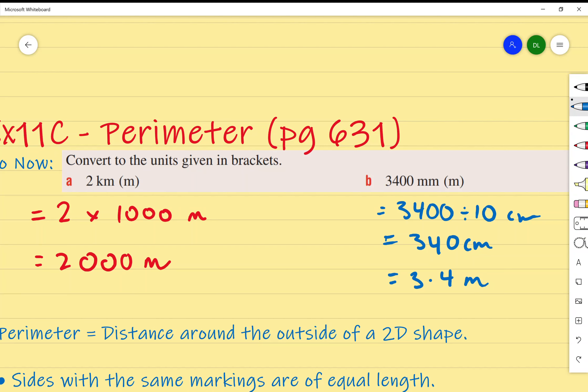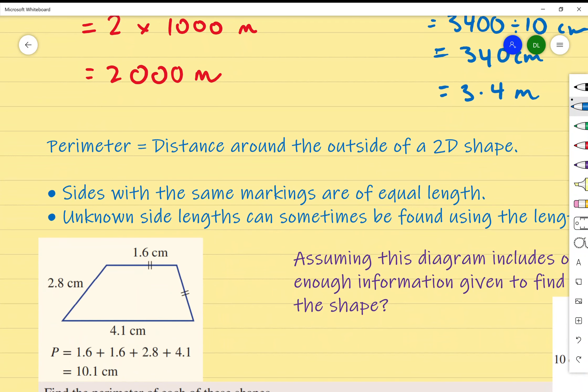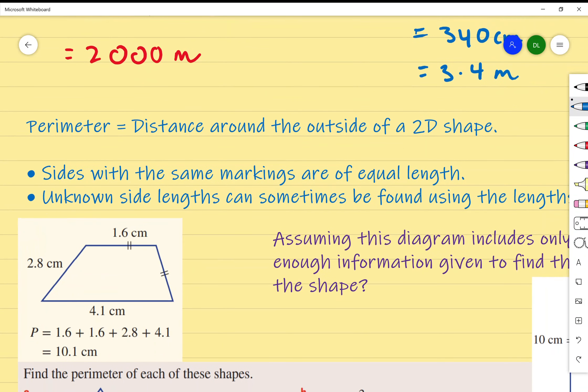These are the notes for today's exercise 11C. Write down the first sentence: Perimeter equals distance around the outside of a 2D shape. Some of you already did this in primary school, but this is more difficult application style of perimeter.